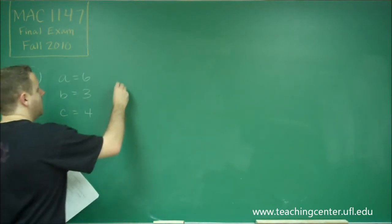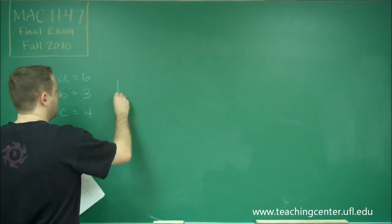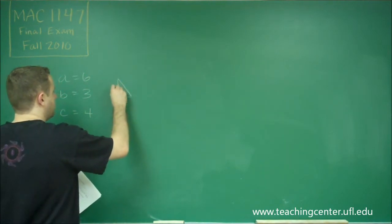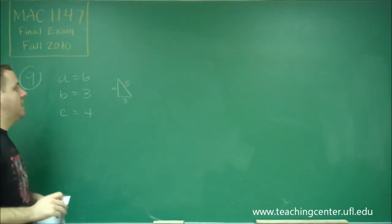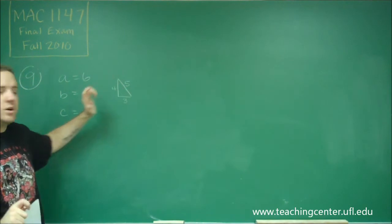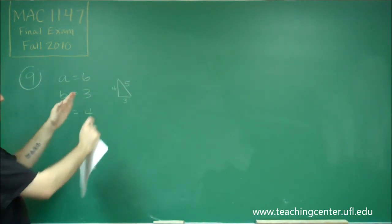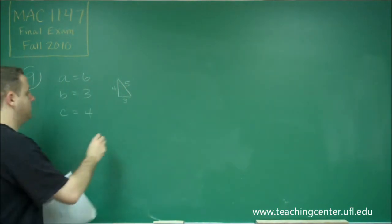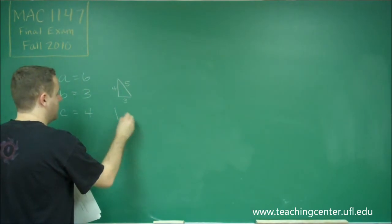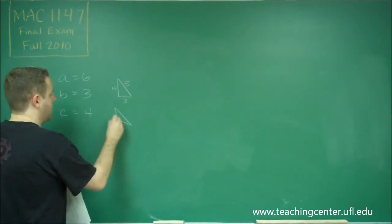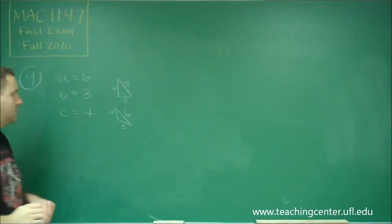However, if this was our three, four, five triangle, you can think about if you wanted to make the five side longer and turn it into six, you'd have to spread the three and four out some. So you would have to make it more like that, where we don't have a right angle anymore.